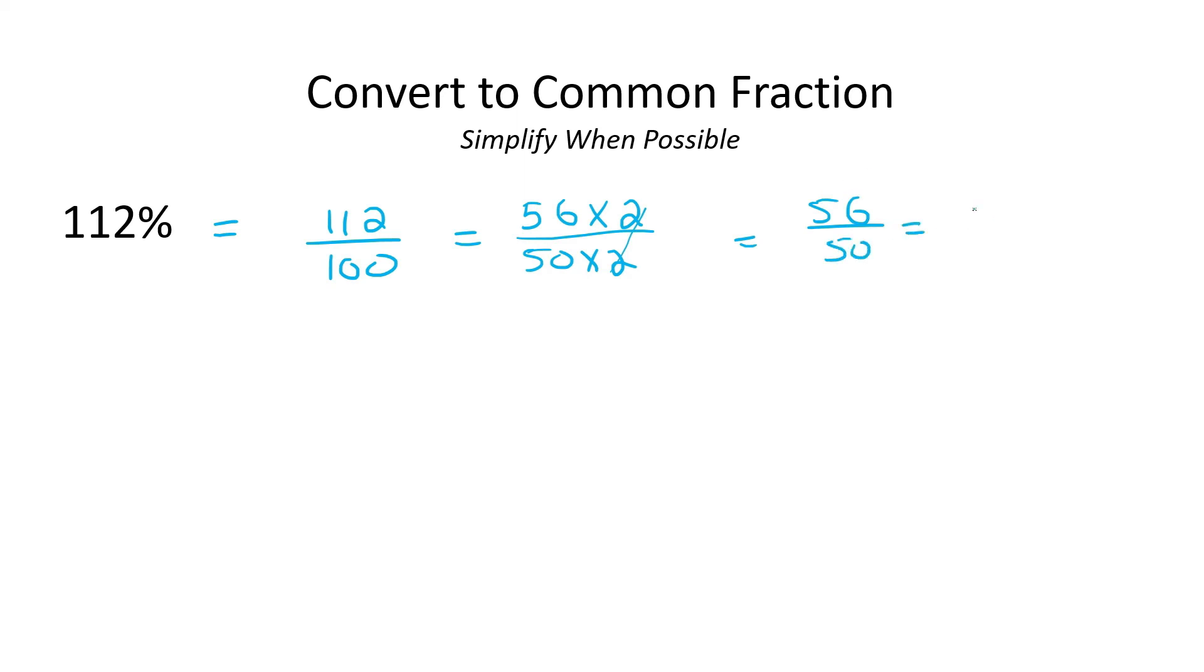Now I know that the number 56, I could write it as 28 multiplied by 2. And this can be written as 25 multiplied by 2. So that those 2 can now cancel. And then you're left with that. Now your teacher might ask you to change it to a mixed number because this is an improper fraction because the number at the top is larger.